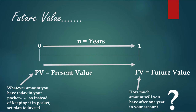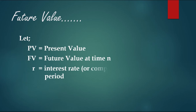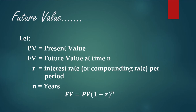There must be a rate offered by the bank or the depository company. Present value is represented as PV, future value at time n as FV, and interest rate as r — which can also be called the compounding rate per period. n is the number of years. The formula to calculate the future value using the interest factor is: FV = PV × (1 + r)^n, where (1 + r)^n is the compounding factor.